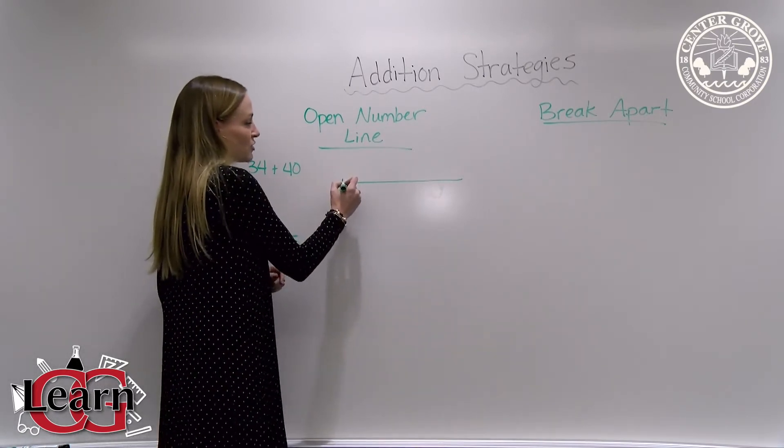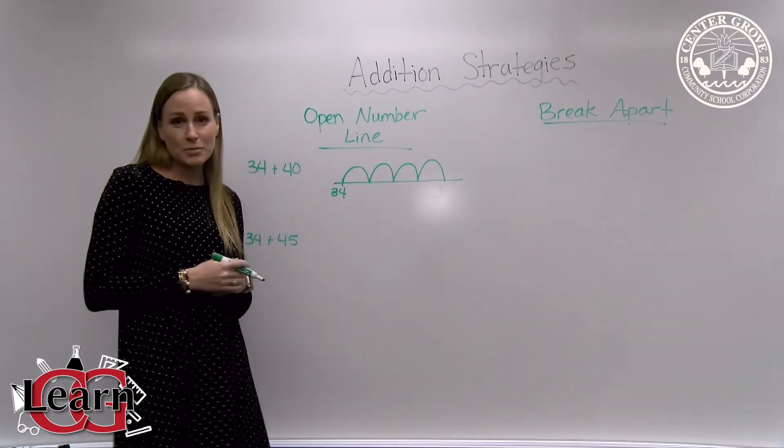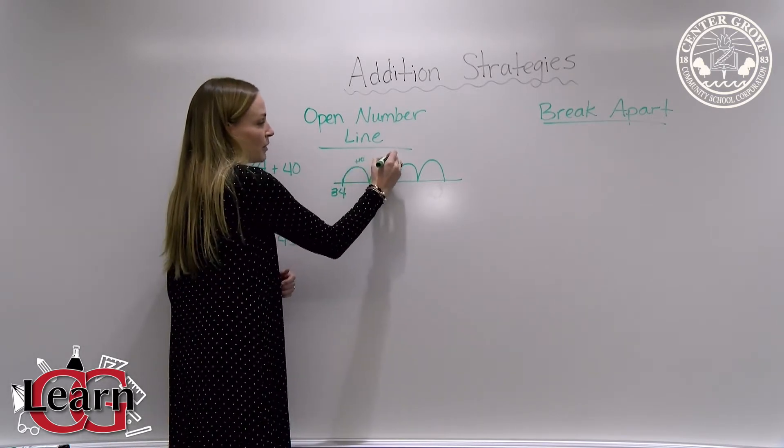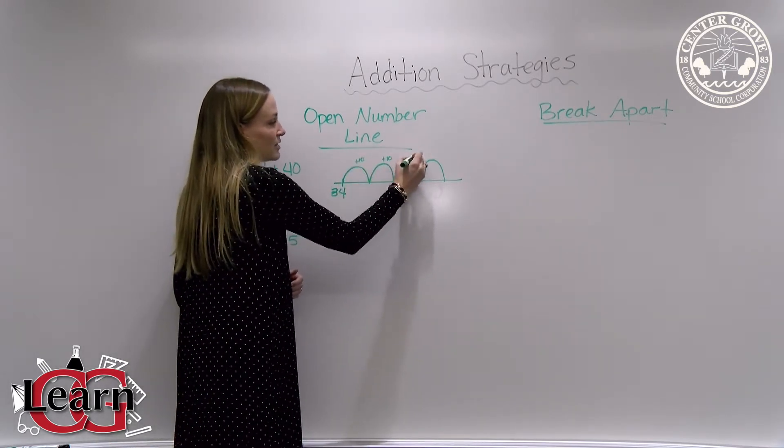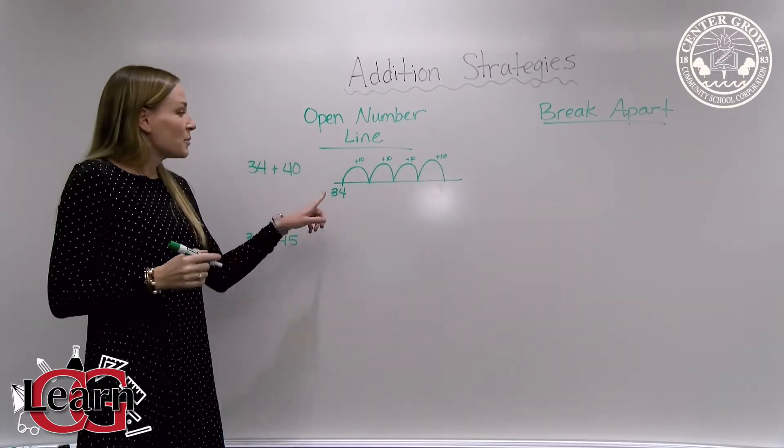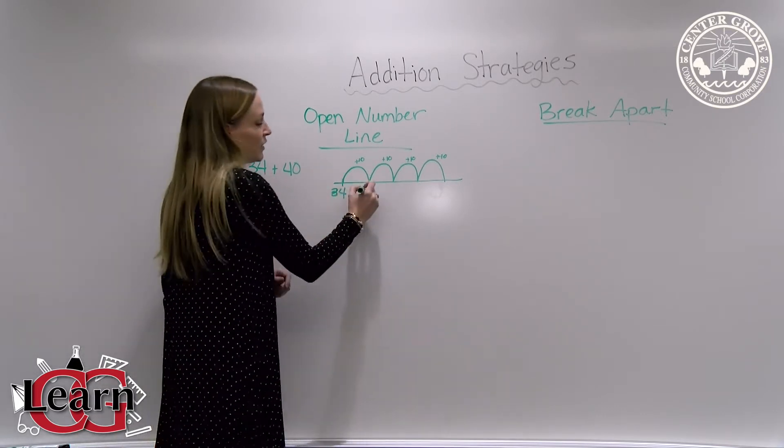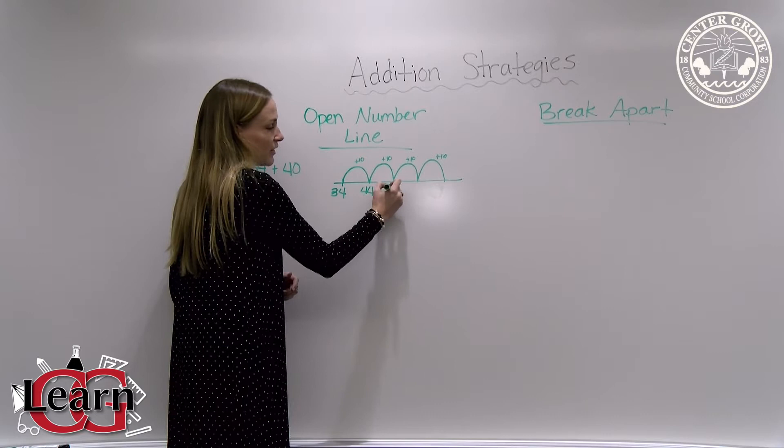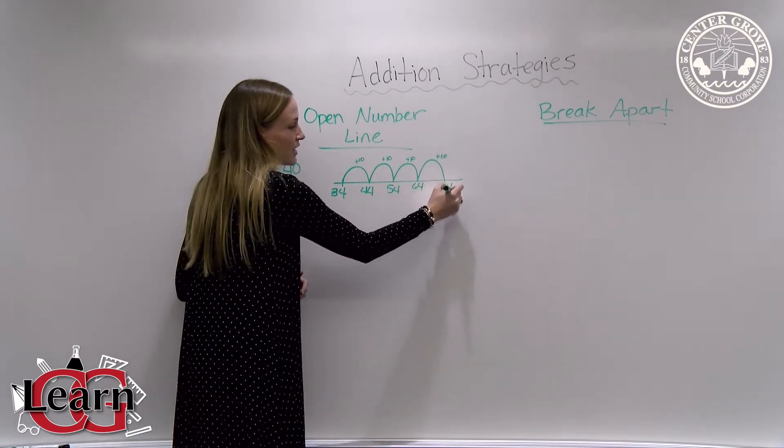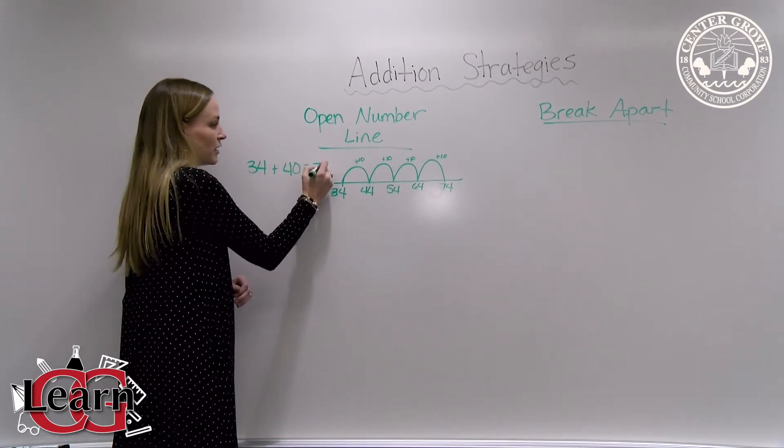So we'll start here and jump 10, 20, 30, 40. Now if it helps you, you can put a little reminder above each bump that you're adding 10. If you can just remember it, you can leave that part empty. We're at 34 and we're going to add on 10 more. We'll get to 44, then 54, then 64, and then 74, so our sum equals 74.